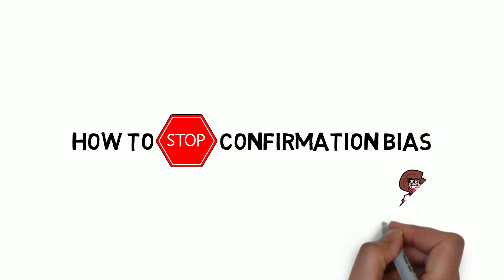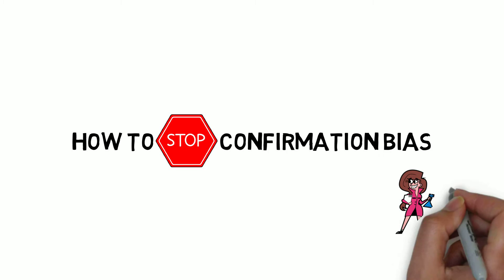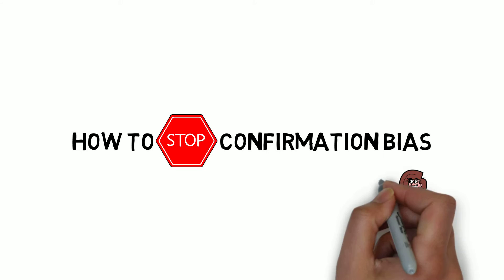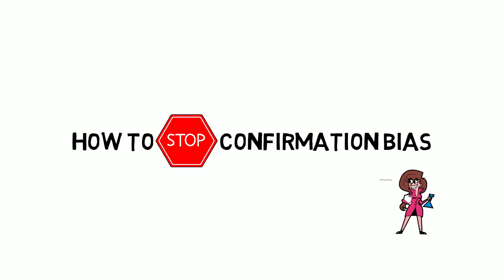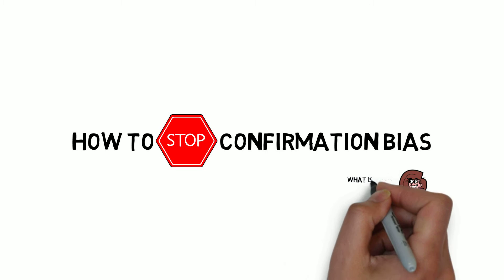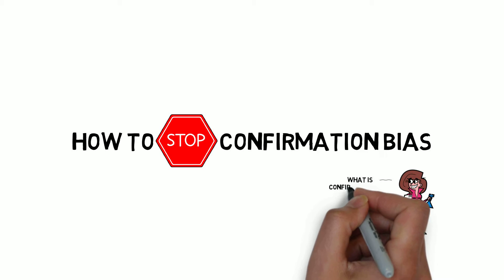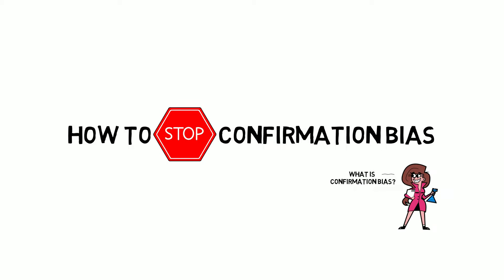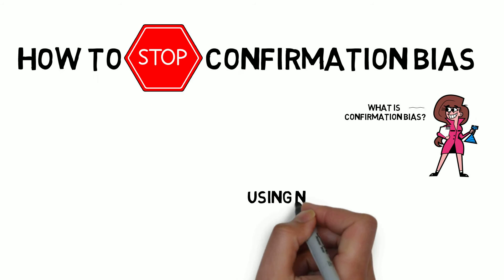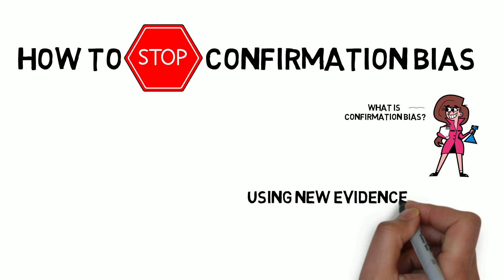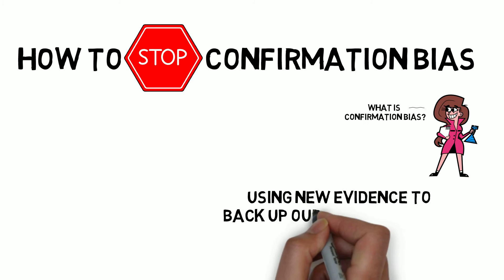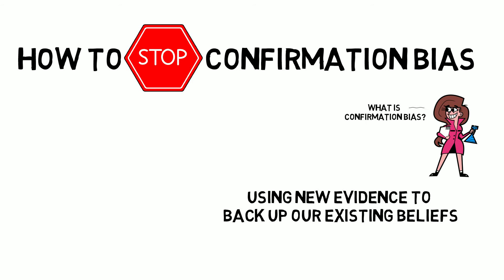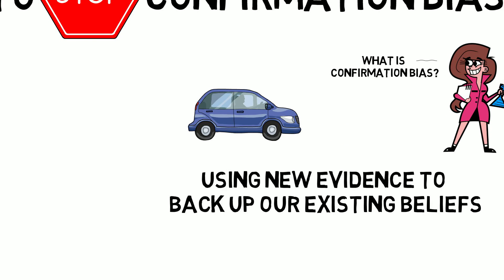So firstly, let's quickly talk about what confirmation bias is. Put simply, confirmation bias is when we use evidence we've just discovered to back up our existing beliefs without thinking about alternative interpretations or explanations for this evidence.